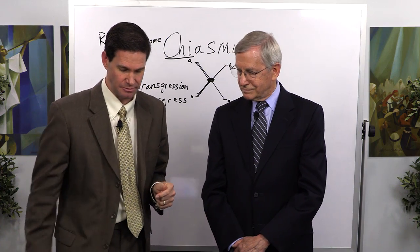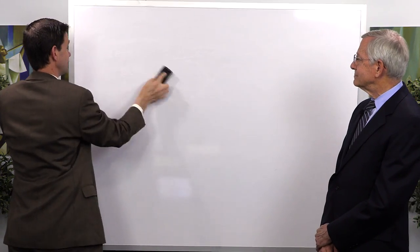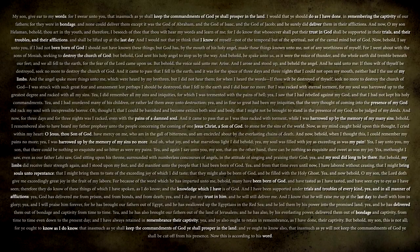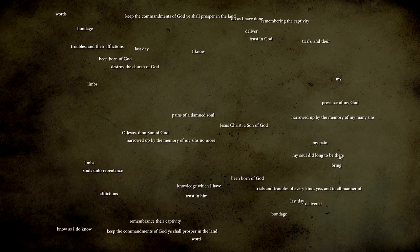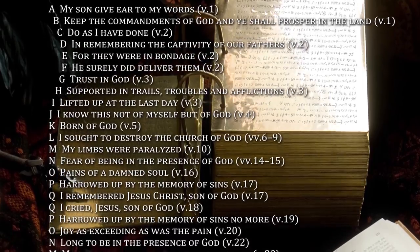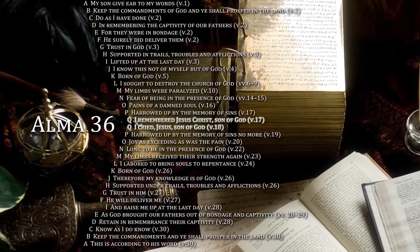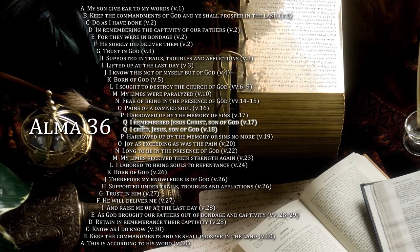Let's jump into Alma 36 specifically. How would you classify it in the realm of chiasmus in the Book of Mormon? I've written an article called 'Alma 36: The Masterpiece.' When you compare all of the thousands of places in the ancient world where you have chiastic structures, this is the best. It's the most purposeful, the most precise. It can be analyzed at the word level, at the concept level. Most of all, at the spiritual use of this technique to let us know exactly what was the turning point of Alma's life.